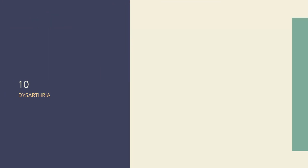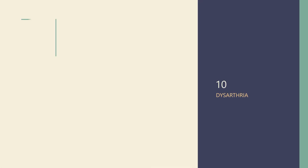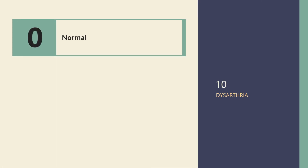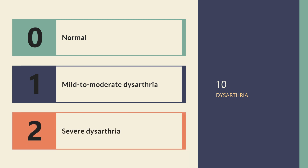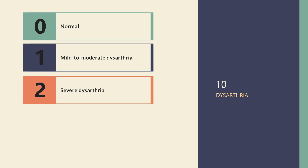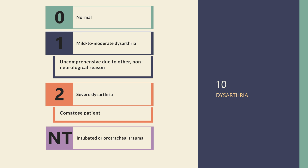In item 10, Dysarthria, we test the patient's articulation and clarity of speech. If possible, depending on age and other deficiencies, patients are asked to read aloud the words on the scoring sheet or to repeat them after you. Score 0 if there is no evidence for dysarthria. Score 1 for mild to moderate dysarthria if the patient slurs at least some words and can be understood with some difficulty. Score 2 for severe dysarthria if the patient's speech is so slurred as to be unintelligible or mute, and this is not attributable to dysphagia. If the language is not comprehensible due to any other non-neurological reason, score 1. For comatose patients, score 2. For patients who cannot speak due to intubation or orotracheal trauma, this item cannot be scored.